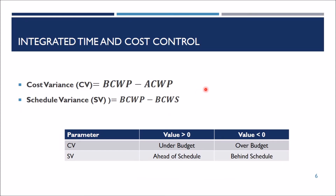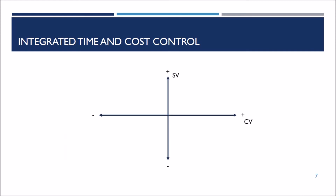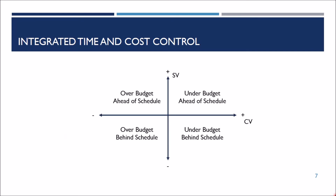The cost variance (CV) and schedule variance (SV) tell you whether your project is on budget and on time or not. If the CV and SV values are greater than 0, then you are under budget and ahead of schedule. It is important to know that there are many cases for the variances. This is the best corner, as your project is under budget and ahead of schedule, and this is the worst corner, as your project is over budget and behind schedule.